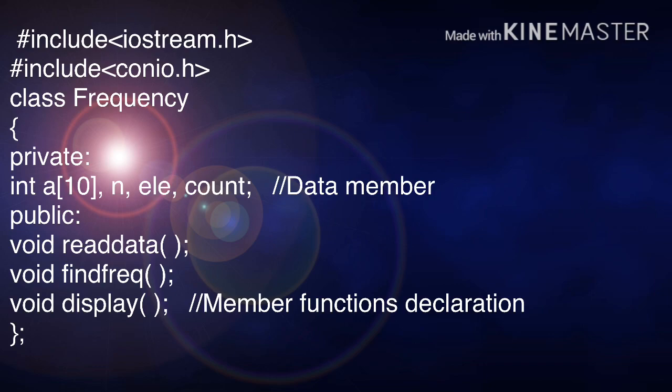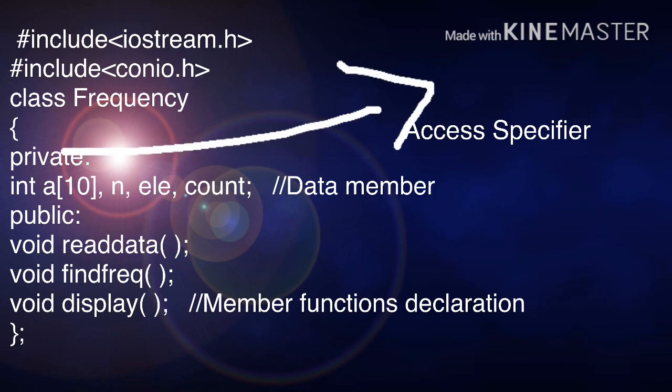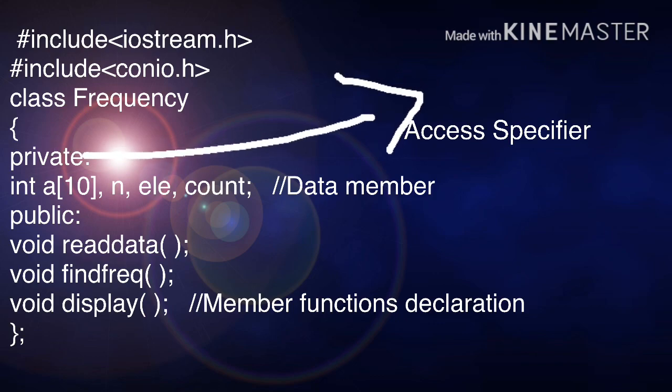So next comes the class. Here you can see the class declaration. Class space frequency - frequency is the class name. Then comes the flower braces, then private. Always the data members will be private.